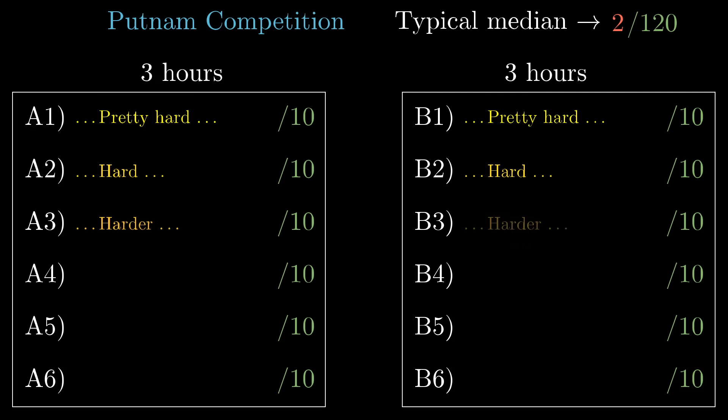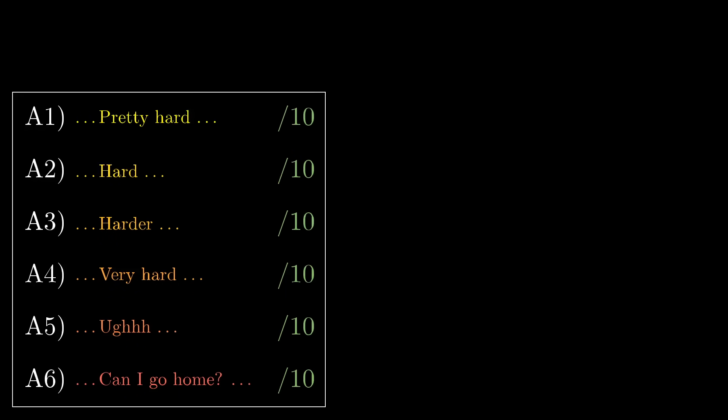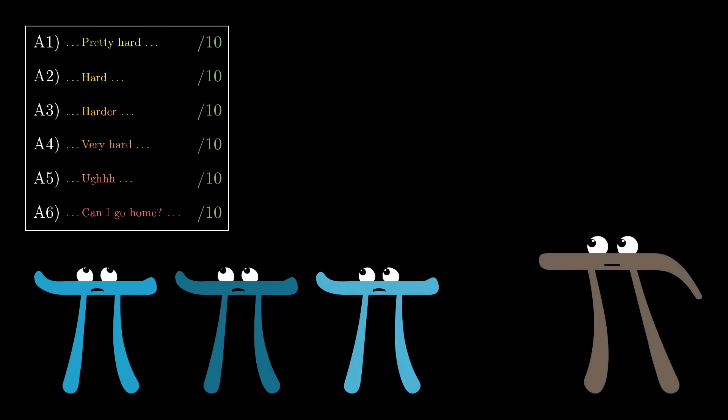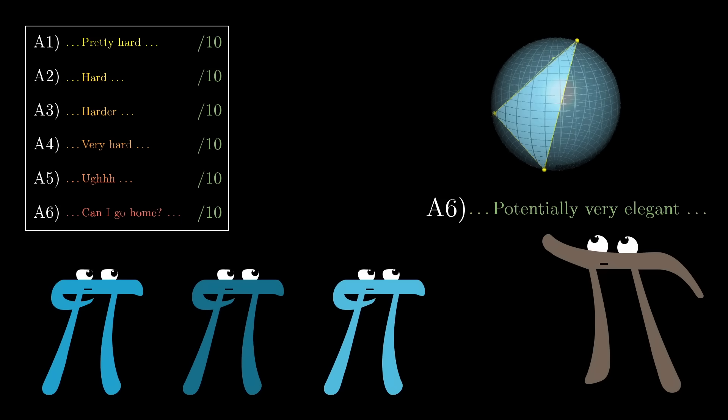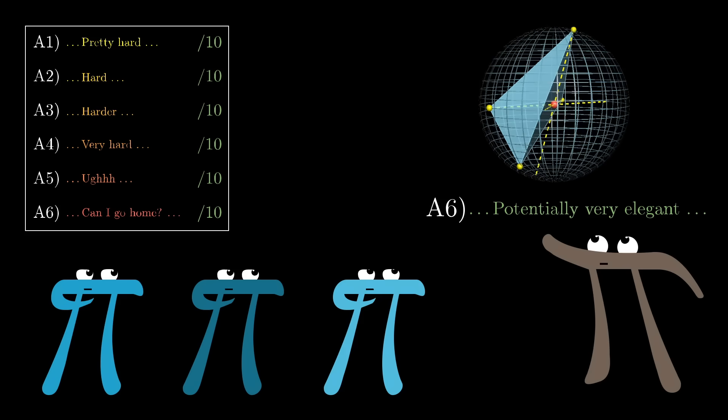And on each one of those sections of six questions, the problems tend to get harder as you go from one to six. Although of course difficulty is in the eye of the beholder. But the thing about those fives and sixes is that even though they're positioned as the hardest problems on a famously hard test, quite often these are the ones with the most elegant solutions available.